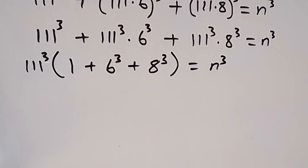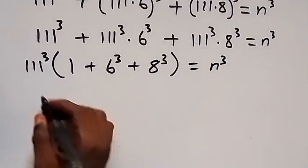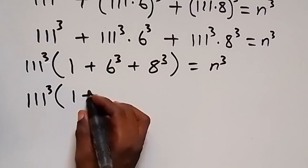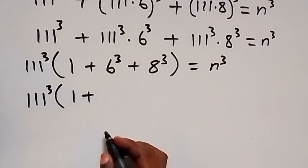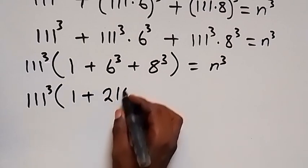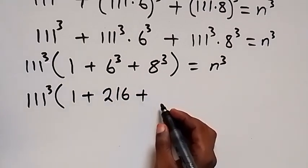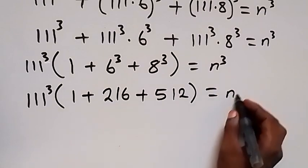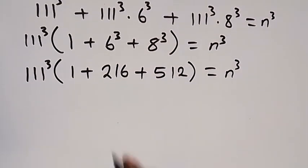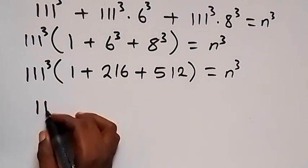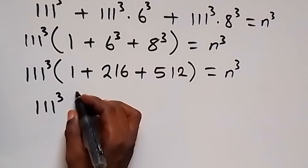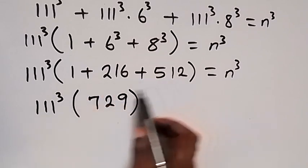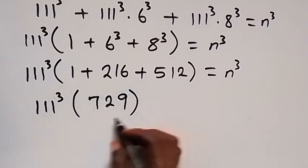From here we can find what we have inside: 111 raised to power 3, times bracket 1 plus 6 raised to power 3 — which is 216 — plus 8 raised to power 3 — which is 512 — equals n raised to power 3. Adding these three numbers: 1 plus 216 plus 512 gives us 729, times 111 raised to power 3, equals n raised to power 3.